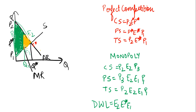Thus, we can say that monopoly leads to dead weight loss. The question is: why does monopoly lead to dead weight loss? Because monopoly is an externality — it does not lead to free functioning of the market. The market cannot function freely because there is a single seller who has control over price. Earlier, several buyers and several sellers were controlling the price, but now a single seller controls the price and buyers have no control. Therefore, it leads to dead weight loss.